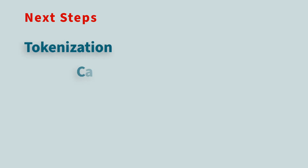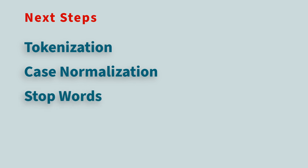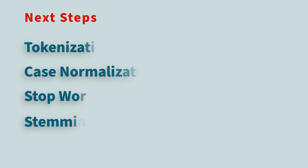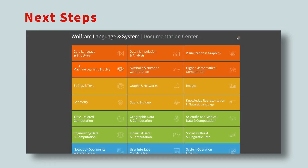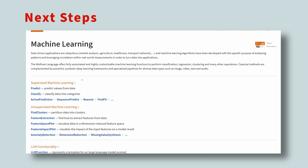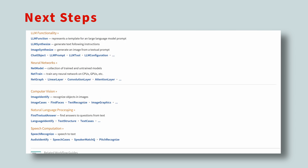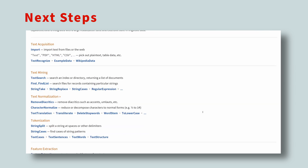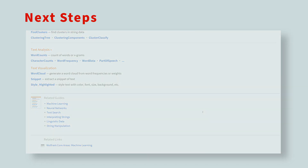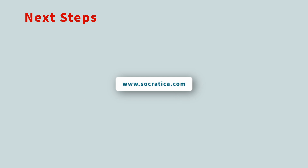We've seen some of the key preprocessing techniques used in NLP: tokenization, case normalization, removing stop words, and stemming. But remember, there are many other functions available. You can find more details about the built-in natural language processing functions in Mathematica on the Wolfram Documentation Center. The more you work with natural language processing, the more you will encounter these and other preprocessing tools. And be sure to visit our website, Socratica.com, to check out our current and upcoming courses on AI and machine learning.